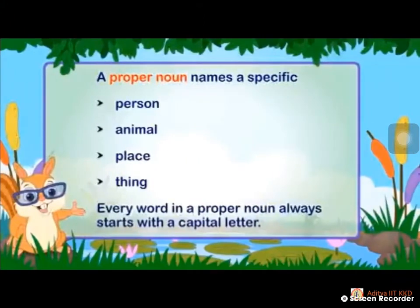A proper noun names a specific person, animal, place, or thing. One more point you should remember: every word in a proper noun always starts with a capital letter. It may come in any part of the sentence — at the start, middle or end. Anywhere, a proper noun starts with a capital letter.